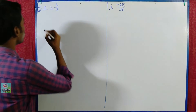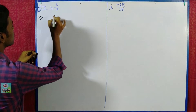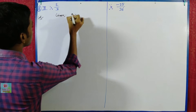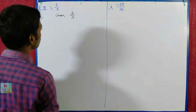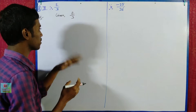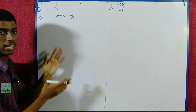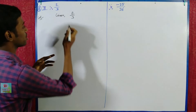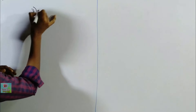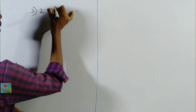First of all, 2 by 3. Given 2 by 3, we need to find the decimal formula. If we are doing the normal division, what is the answer?